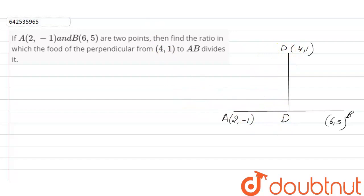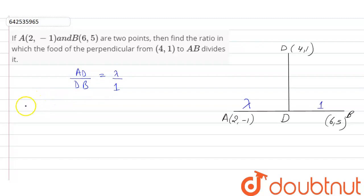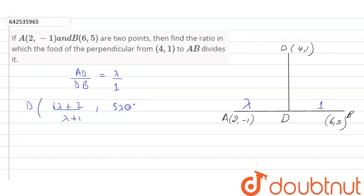Point D is the point which divides the line AB in the ratio lambda to 1. So AD divided by DB is equal to lambda by 1. By the section formula, point D will be (6λ + 2)/(λ + 1) comma (5λ − 1)/(λ + 1).